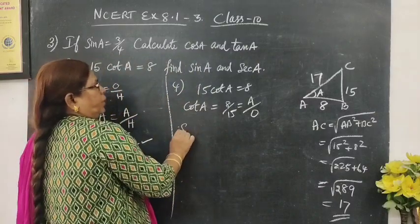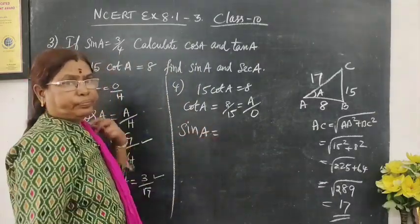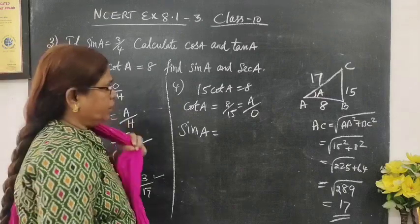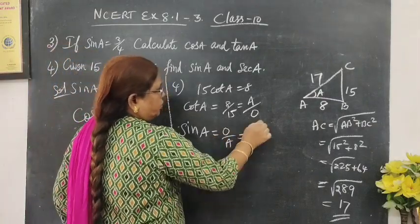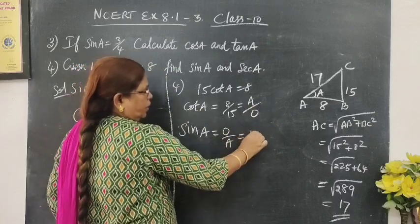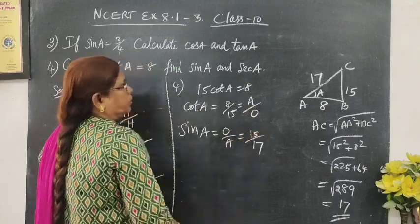We find sin A. Sin A formula: opposite side by hypotenuse. Opposite is 15, hypotenuse is 17.